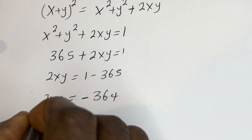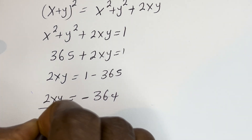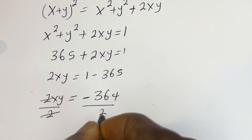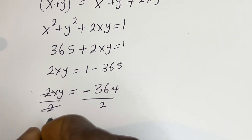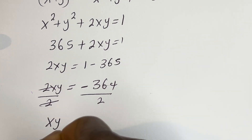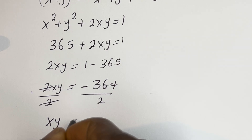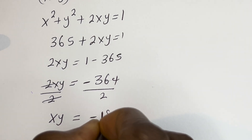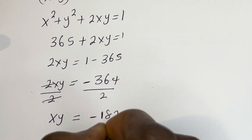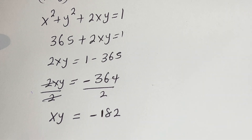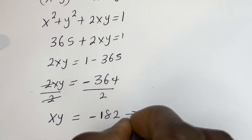Dividing both sides by 2, sy is equal to minus 182. Let's call this equation 5.